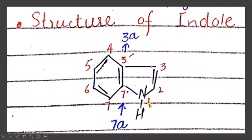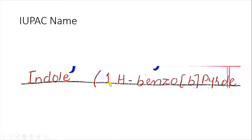If we start numbering for the indole, we will start from the nitrogen: this is one, this is two, this is three. At this carbon there will be 3a, then four, five, six, seven, and seven a. So in the case of indole we start numbering from nitrogen, but for other heterocycles we can start from other points.